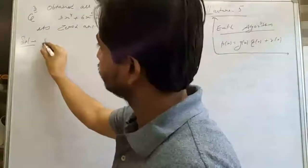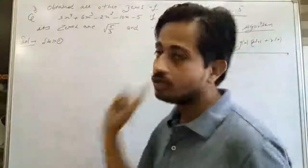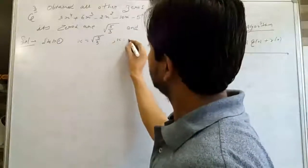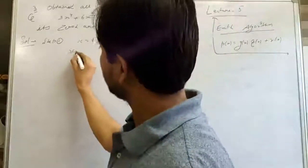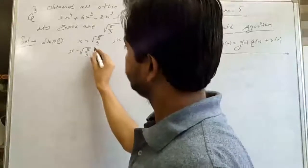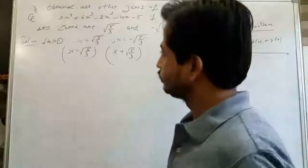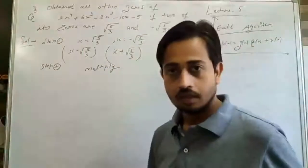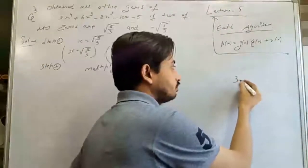Step 1: The given zeros are x = √(5/3) and x = −√(5/3). If we take these to the left-hand side, we get the factors (x − √(5/3)) and (x + √(5/3)). Step 2: Multiply these two factors. Using the identity (A − B)(A + B) = A² − B², where A = x and B = √(5/3), we get x² − (√(5/3))² = x² − 5/3.